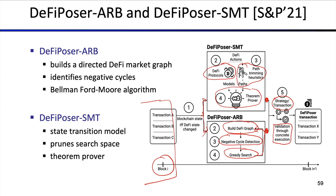Concrete execution means executing a particular transaction locally on a particular block height without broadcasting it yet. If you find that it's actually profitable, then you broadcast the transaction and try to mine it at the top of the next block or at some position in the next block. You want to mine it at the top of the next block because you don't want others to front-run your transaction and take away the opportunities you identified.